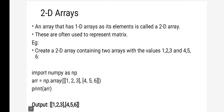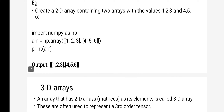Now, the two-dimensional array. Just as a one-dimensional array is a collection of zero-dimensional arrays, a two-dimensional array is a collection of one-dimensional arrays. In the example, I create a two-dimensional array with six elements: 1, 2, 3 as the first row and 4, 5, 6 as the second row. I import numpy, create the array object, and print it.